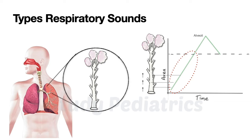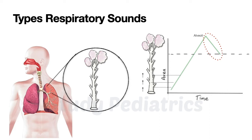As air reaches the alveoli, it expands, and the alveoli produce sound represented as a further ascending line. As the lung recoils, air gushes from alveoli into bronchioles producing sound, shown as a descending line. However, during expiration, as air moves along the dilated bronchioles, there is not much sound produced compared to inspiration, so no line is drawn.